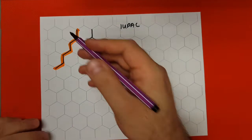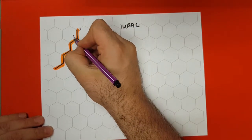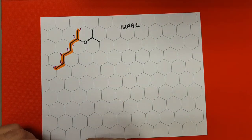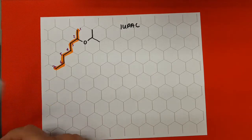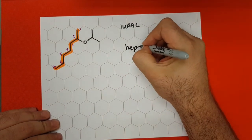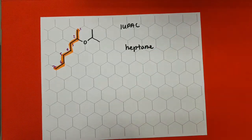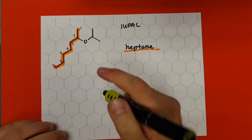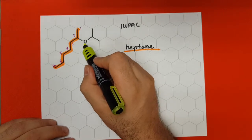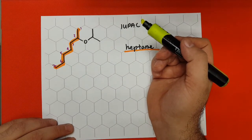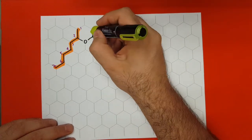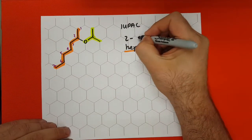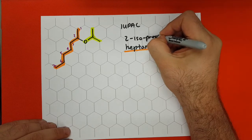And then we number it so we don't make any mistakes, giving the substituents the lowest numbers: 1, 2, 3, 4, 5, 6, and 7. So my main chain — the orange part — is going to be called heptane, because it's just single-bonding carbons. And what is attached at number 2? We have isopropyl, but it's interrupted by this oxygen group, so it's effectively going to be called isopropoxy. So I highlight all of this, and at number 2 we have isopropoxy.